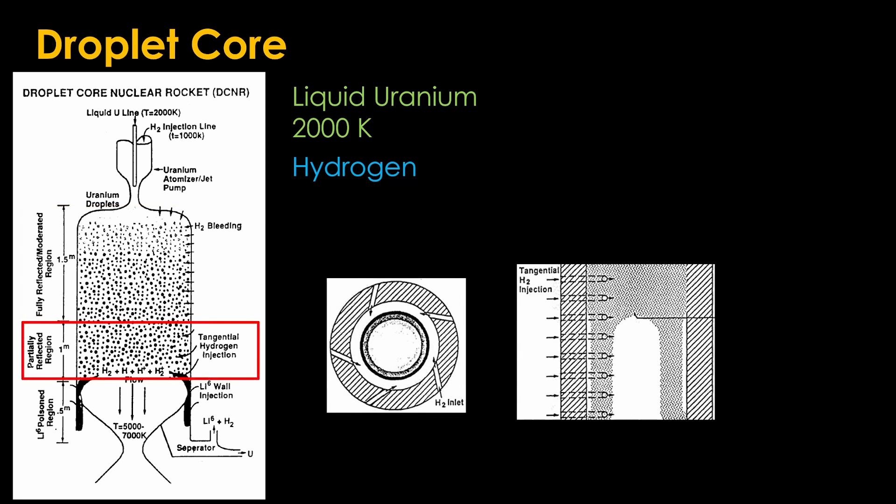We're going to use the same approach as in the colloidal reactor, injecting hydrogen so it swirls in the middle of the chamber and pushes the majority of the uranium towards the outside walls.